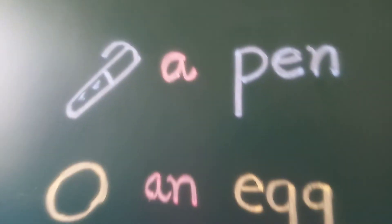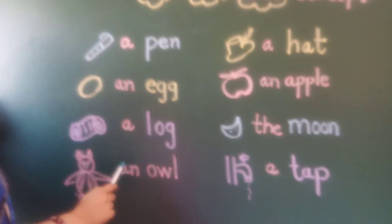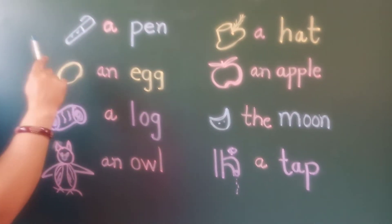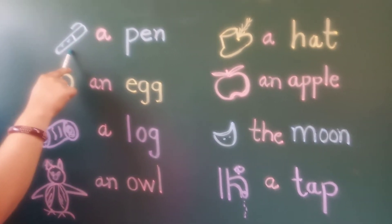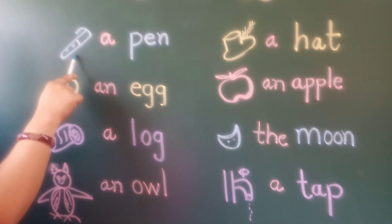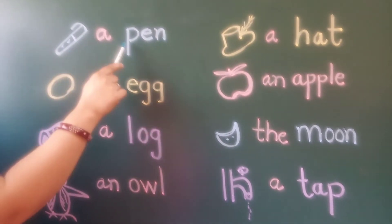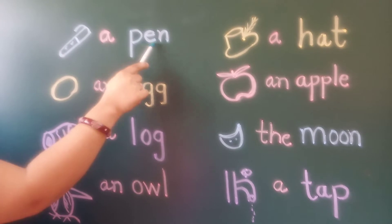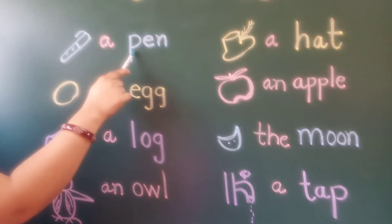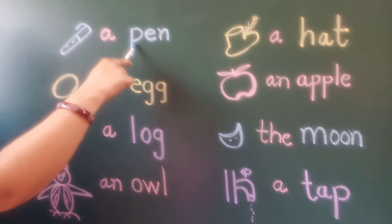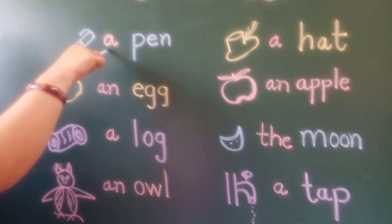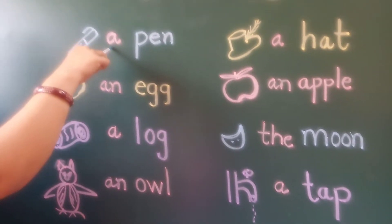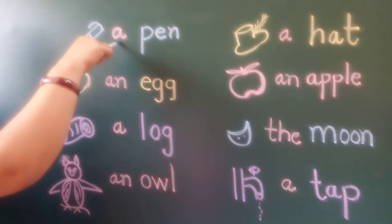Now, can you see here — I have drawn some pictures. Let us read. Which picture is this? Pen. So what is the spelling of pen? P, E, N — pen. So P is a consonant, so we are using 'a'. We have written: a pen.